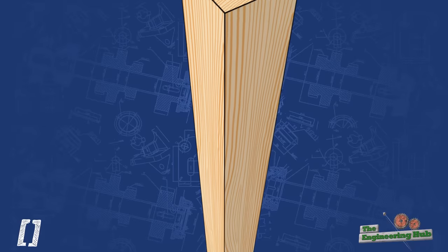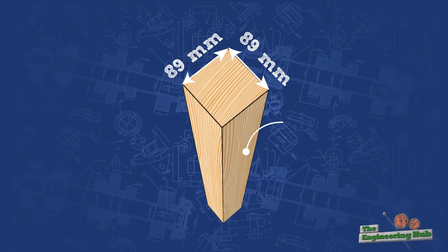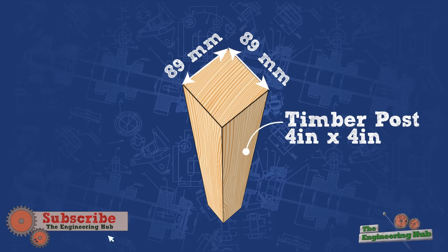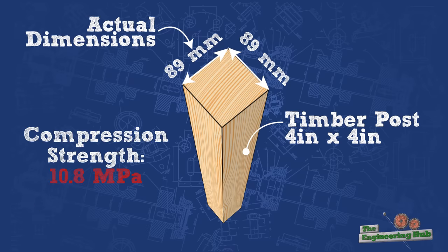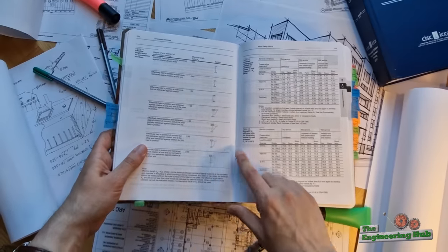We assumed a 4x4 spruce pine fir timber post of a standard grade. For the viewers outside of North America, that is an 89x89 mm² post with a compression strength parallel to grain of 10.8 MPa.